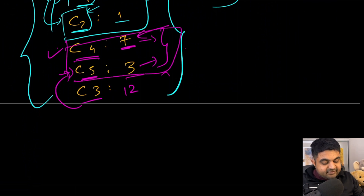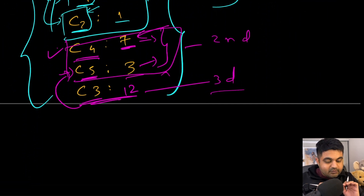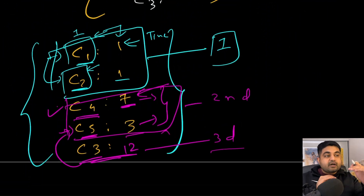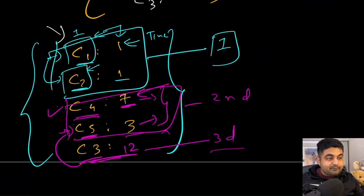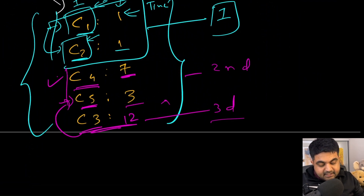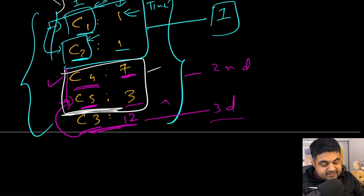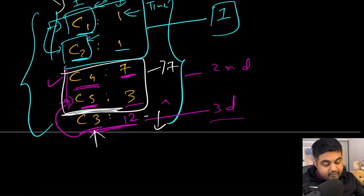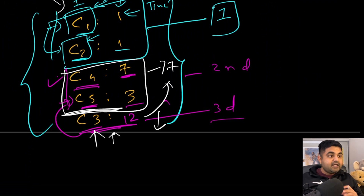So this C4 and C5 group is our second fleet, and in the end C3 is going to be our third fleet. That's all you need to do to solve this problem. Once we have the sorted list of cars with the time each takes to reach the destination, we can easily compute the fleets — for every single fleet, all we need to check is what is the longest time it takes for that fleet to reach the destination. If a subsequent car's time is less than or equal to that maximum, it joins the fleet. Because C3's time is not less than seven, it has to be a fleet on its own.